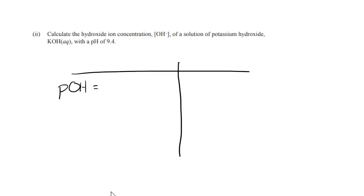So the pOH equals 14 minus pH. And so that will give us 14 minus 9.4 is 4.6.